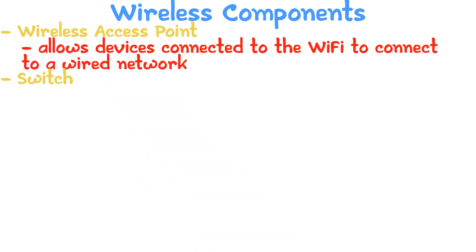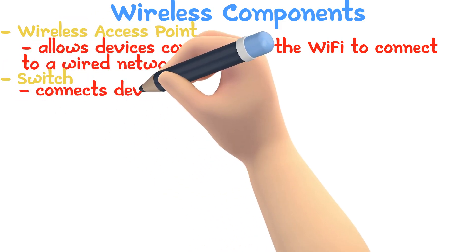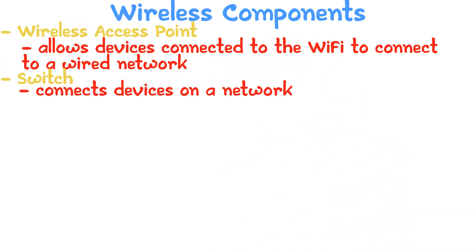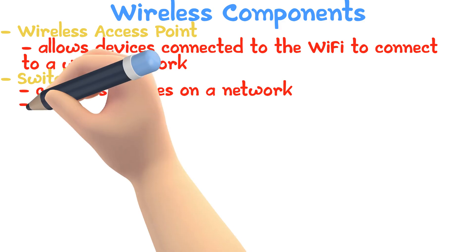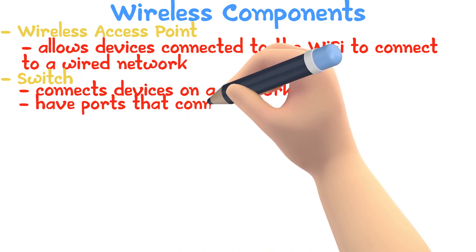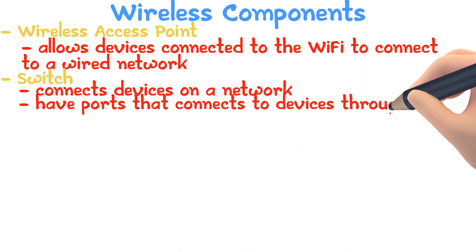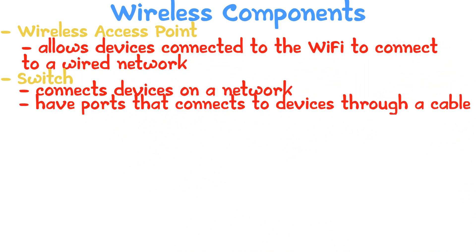Switch: this connects devices on a network. Switches have ports that connect to devices through a cable. A smarter way would be to connect a wireless access point to a switch to allow wireless access.